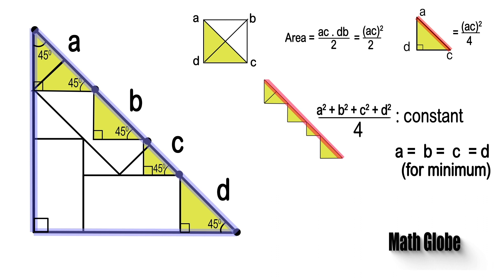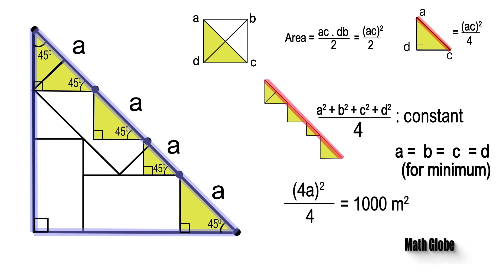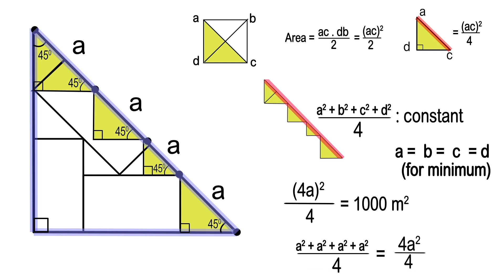From this, if we assume the length of the hypotenuse of the large triangle to be 4A, we can express the area of the large triangle as shown. Likewise, the total area of the yellow triangles will be equal to 4 times A squared over 4. From this, if we compare the first expression with the second one, we note that the minimum area of the yellow triangles will be equal to 250. So, this is the solution.